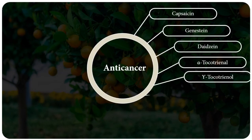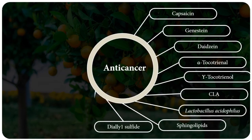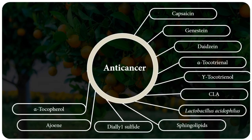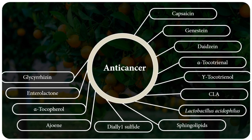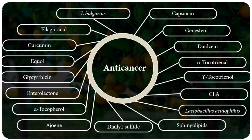The different classes of nutraceuticals are as follows. First, nutraceuticals having anti-cancer properties include capsaicin, genistein, daidzein, alpha-tocotrienol and gamma-tocotrienol, conjugated linoleic acid, Lactobacillus acidophilus, sphingolipids, limonin, diallyl sulfide, ajoene, alpha-tocopherol, enterolactone, glycyrrhizin, lutein, carnosol and Lactobacillus bulgaricus.